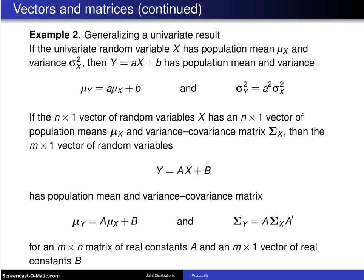There are dozens of examples that could have been done concerning vectors and matrices for n-dimensional random variables. But here is a second and last one that's going to be done on the slides here, and that is generalizing a univariate result.